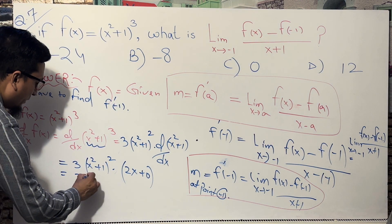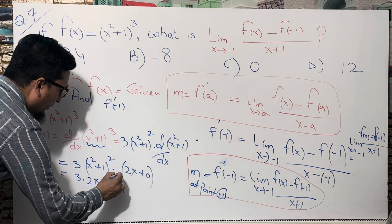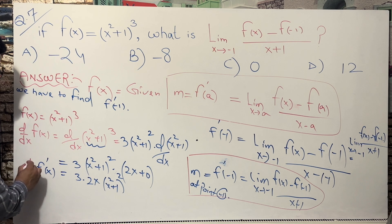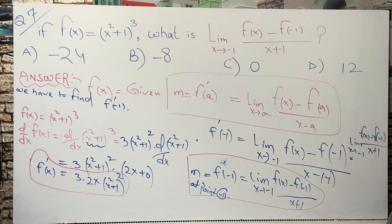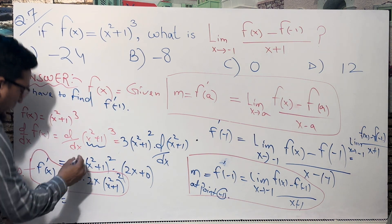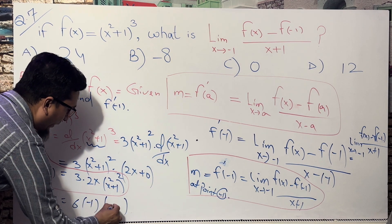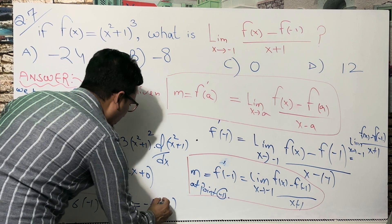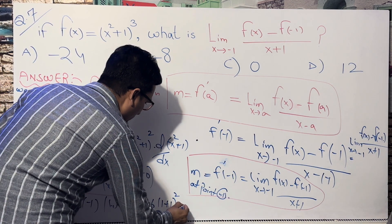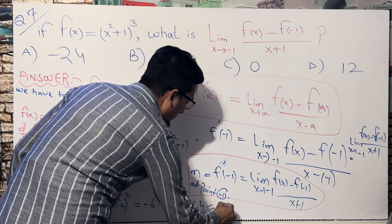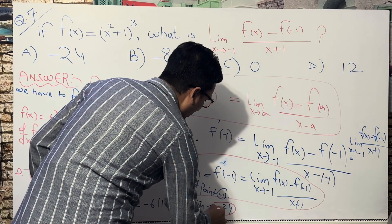So f′(x) = 3 · 2x · (x² + 1)² = 6x(x² + 1)². That is the derivative. Now substituting x = −1: f′(−1) = 6·(−1)·((−1)² + 1)² = −6·(1 + 1)² = −6·(2)² = −6·4 = −24. The answer is −24, which corresponds to answer choice A.